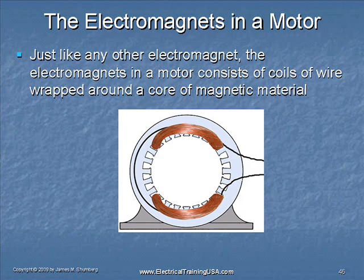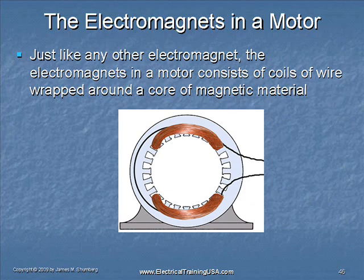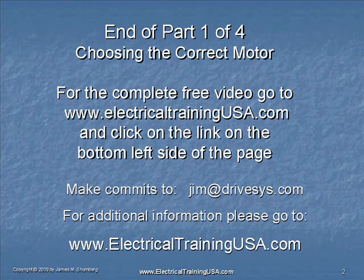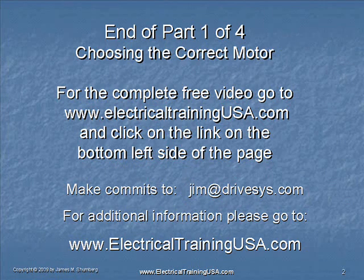The electromagnets in a motor, just like any other electromagnet, consist of turns of wire wrapped around a magnetic material. In the case of a motor, it's usually some type of magnetic steel, or steel designed specifically to conduct a magnetic field. This brings us to the end of Part 1, Choosing the Correct Motor. Parts 2, 3, and 4 are also on YouTube, or you may see the complete free video by going to www.electricaltrainingusa.com and clicking on the link at the bottom left side of the page for choosing the correct motor.